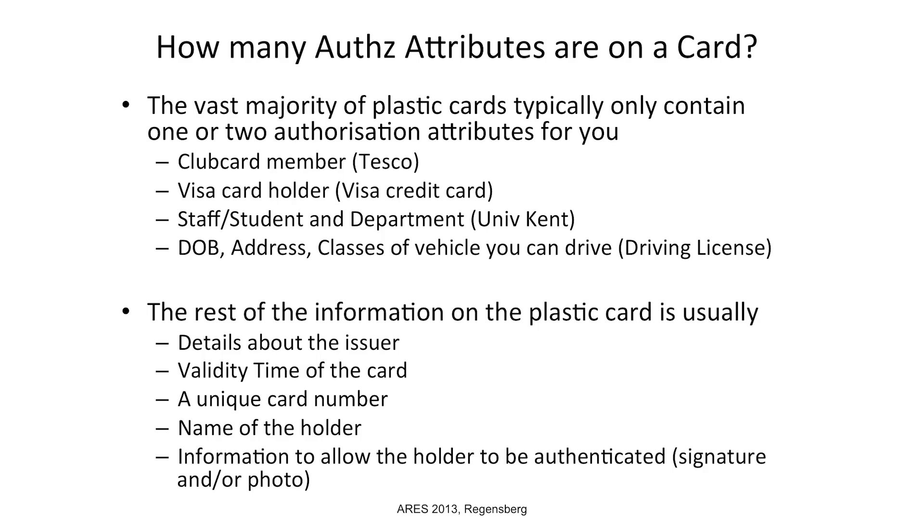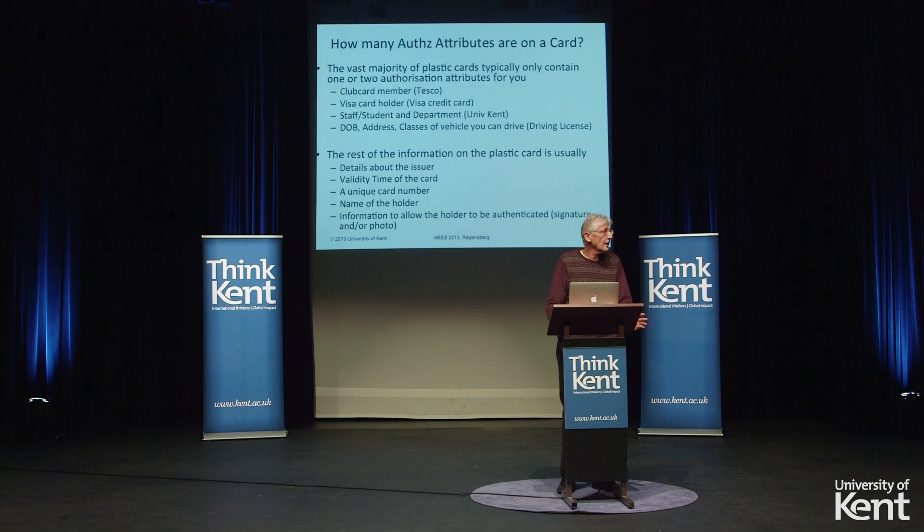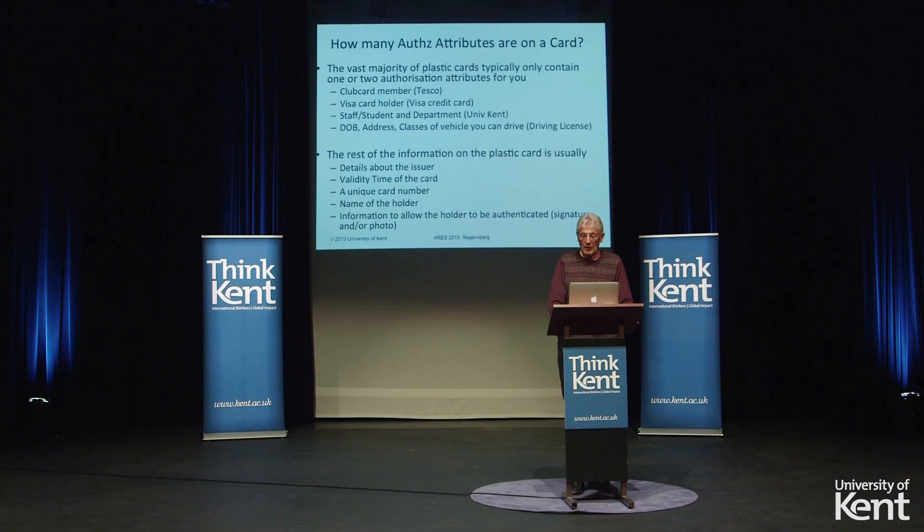In the electronic world we don't have the equivalent, and this is what my research has been doing. How many authorization attributes are on a plastic card? Typically, even though it looks full of information, there's only one or two. For example, the Club card just says you're a Tesco Club card member; the Visa card just says you have a Visa card. The University of Kent has two attributes — staff or student, and which department. A driving license has more: date of birth, address, and vehicle class. The remaining information — photo, signature, issuer name, validity, and unique number — is there for authentication, not authorization.